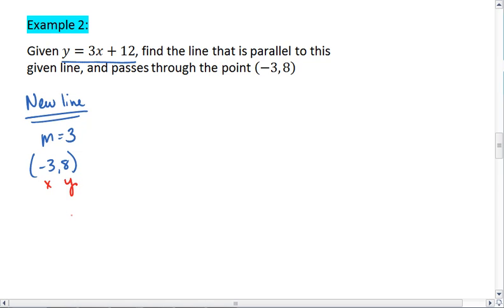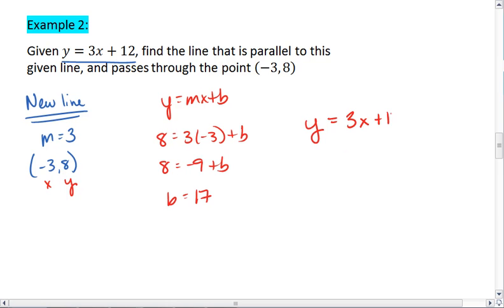You can use either point slope or slope intercept form. I prefer slope intercept form, but we'll look at both. If you use slope intercept form, all you need to do is plug in the values for y, m, and x to solve for b. So we get 8 equals 3 times negative 3 plus b, 8 equals negative 9 plus b, b equals positive 17. Meaning our line has an equation of y equals 3x plus 17.